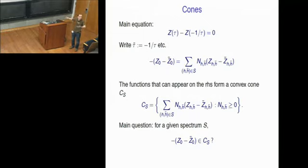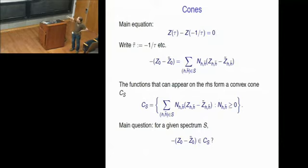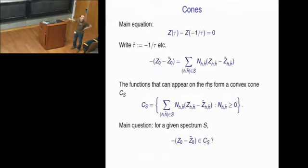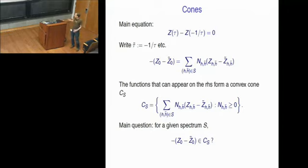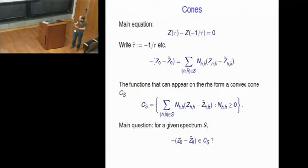We can rewrite this equation using the most general form of the partition function. The central observation is that the right-hand side forms a convex cone over the space of certain functions, since the n's count multiplicities of representations and have to be non-negative integers. In what follows, we will forget about the integer condition and just assume they're non-negative real numbers — you could improve on our work by imposing this additional constraint, but we'll be happy with just real numbers.